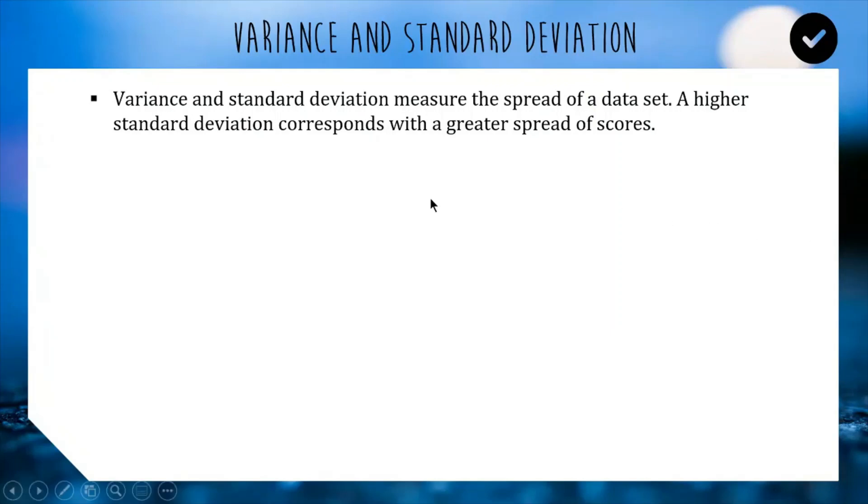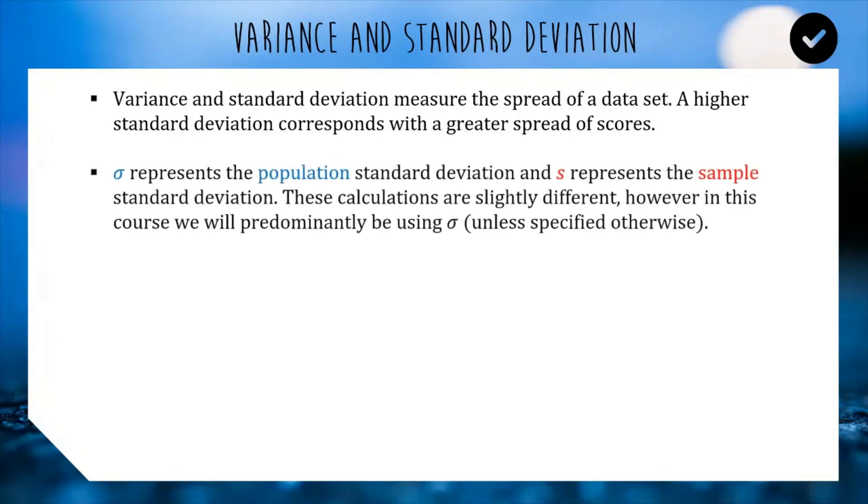Variance and standard deviation measure the spread of a data set. A higher standard deviation means that your data set is more spread out as opposed to a smaller standard deviation, which will be more consistent, less spread out. There are two types of standard deviation. There is population standard deviation, which is denoted by this Greek letter here, which is lowercase sigma. There's also lowercase s for sample standard deviation. These are slightly different measures. They are calculated in slightly different ways for reasons that are overly confusing in my opinion.